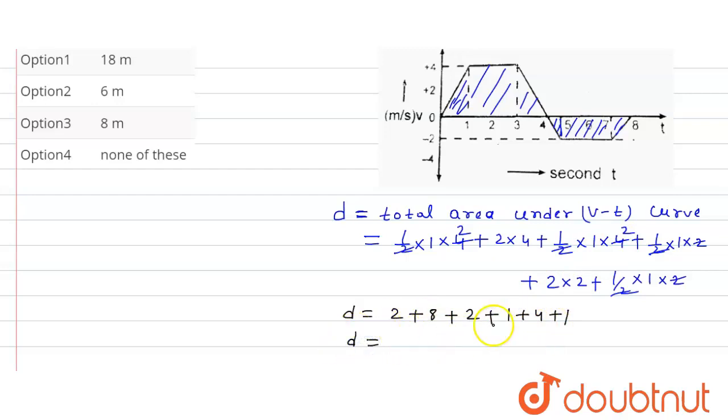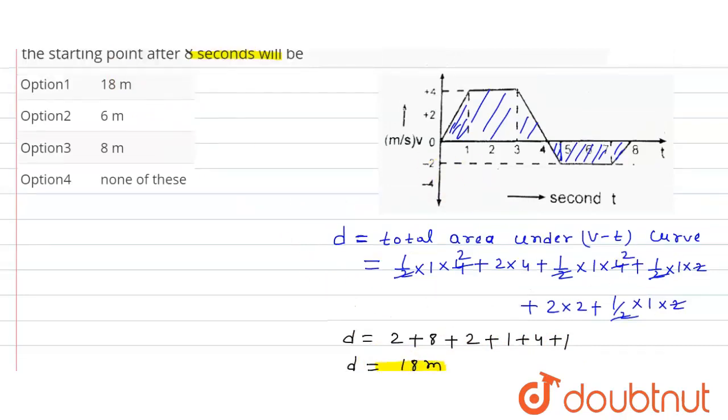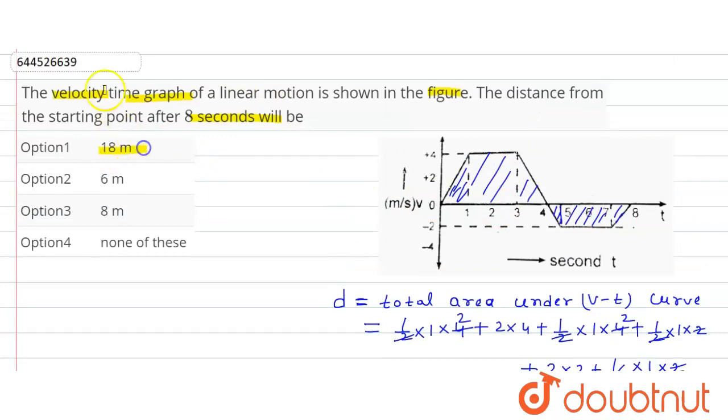So d is equal to how much? Eight plus two, ten, plus two, twelve, plus one, thirteen, plus four, seventeen, plus one, eighteen meters. So this will be our distance of the given question. Distance d is equal to eighteen meters. So option first is the correct option.